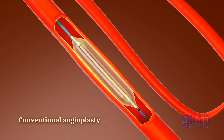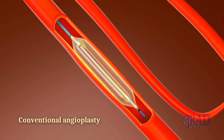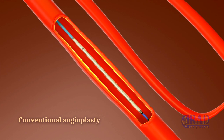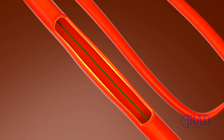Four common interventions are considered based on the findings. Conventional angioplasty: a semi-compliant balloon is advanced over the wire to the narrowed area, and angioplasty is performed to restore the segment to the size of the adjacent normal lumen.